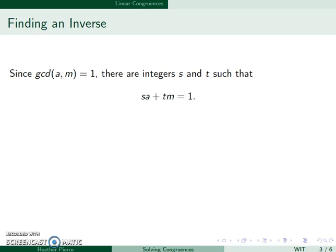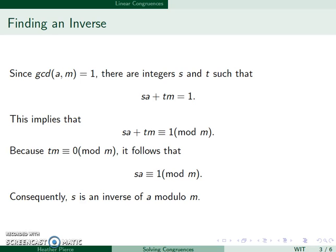Since the GCD of a and m is equal to 1, there are integers s and t such that sa plus tm is equal to 1. This implies that sa plus tm is equivalent to 1 mod m. Since tm is equivalent to 0 mod m, we know that sa is equal to 1 mod m. So the inverse of a mod m is s.